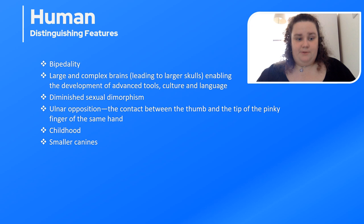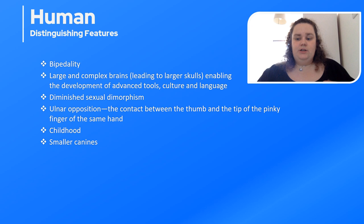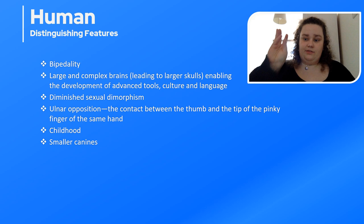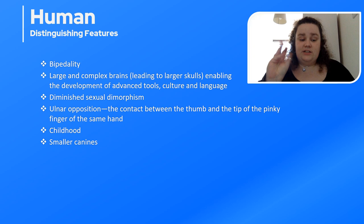There is a smaller amount of sexual dimorphism in humans — a general size difference between the two sexes. There's also ulnar opposition, where you can touch the tip of your pinky finger with the thumb on the same hand. We also have more of a concept of childhood, as well as smaller canine teeth.